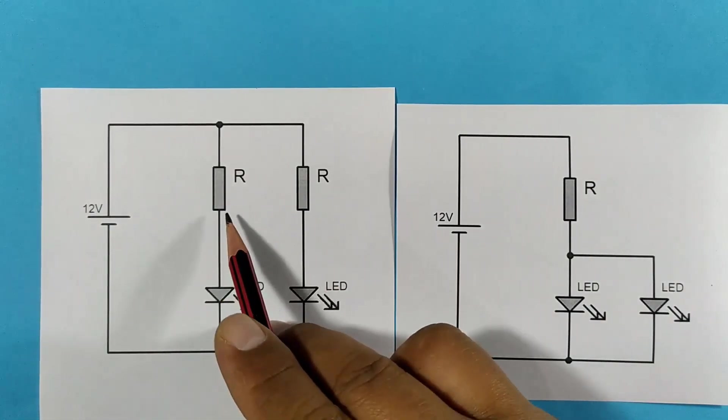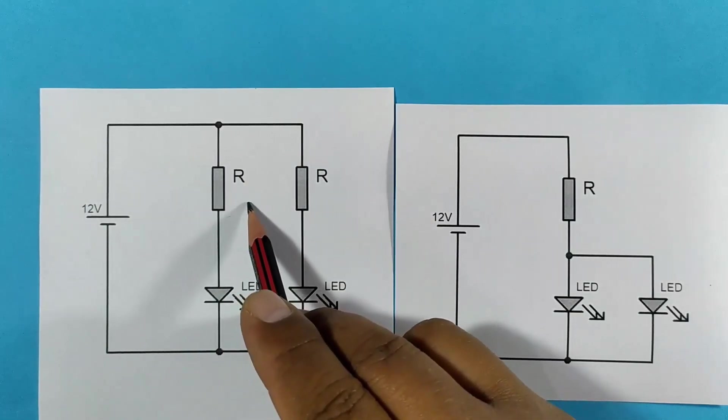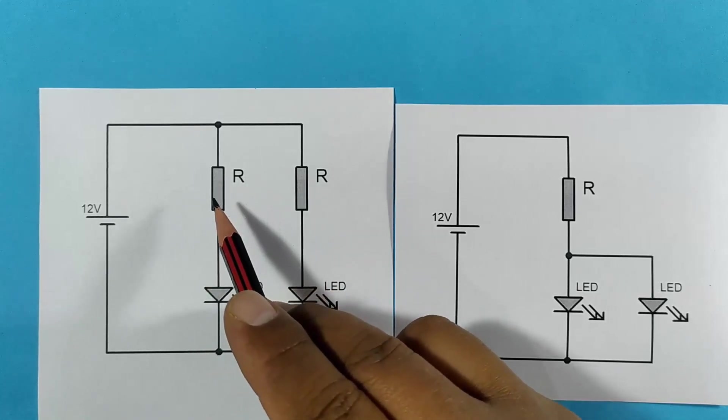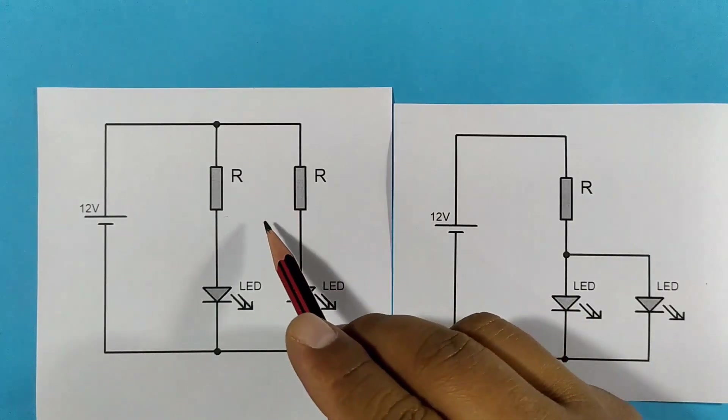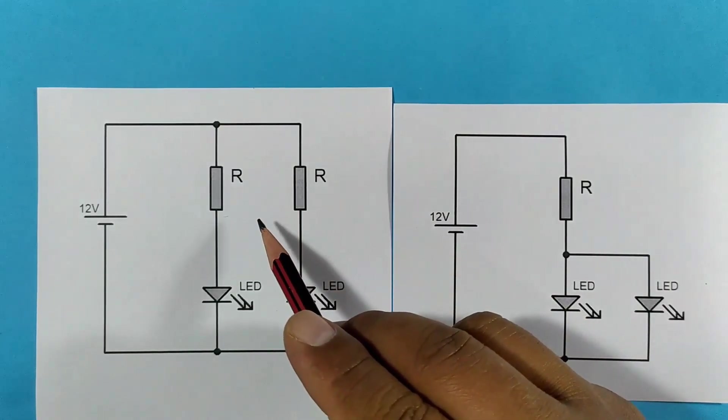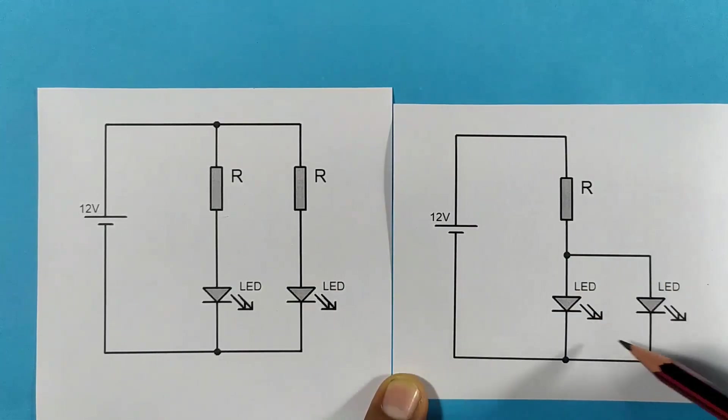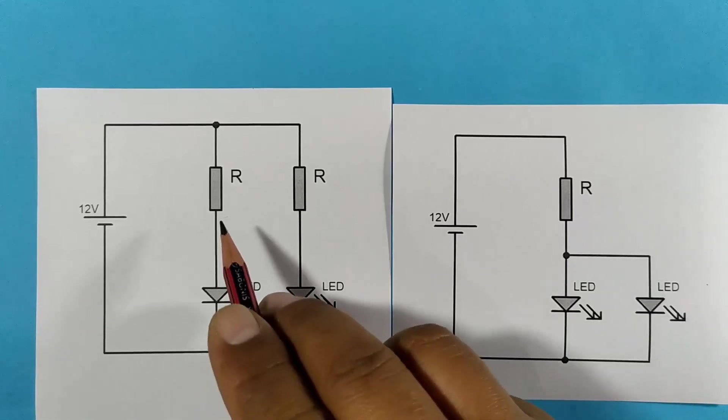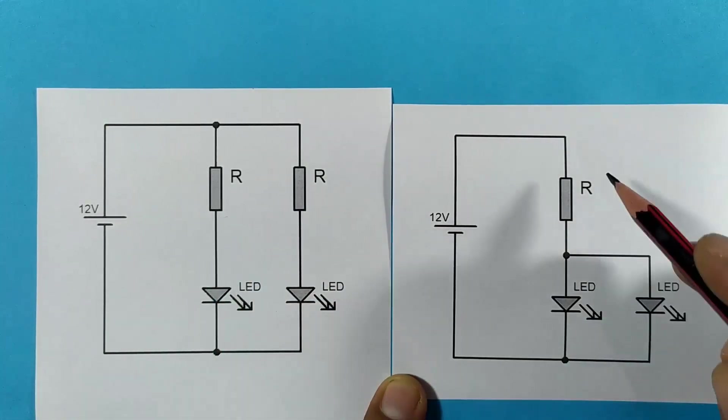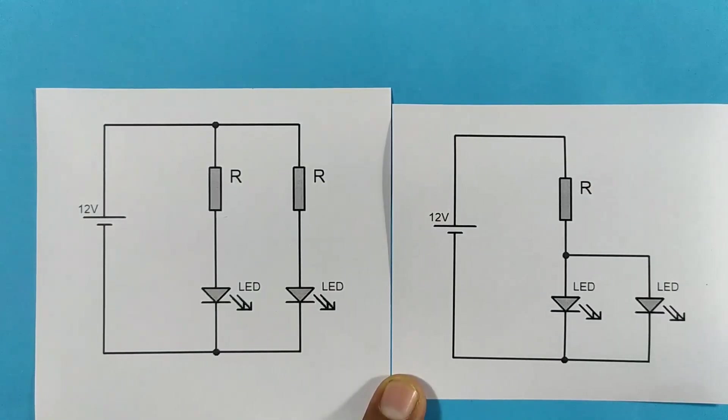Now how does this work? Well, in the same way we saw previously, we calculate the value of the resistor based on the voltage drop across it, which in the previous case was 500 ohms of a quarter of a watt. But in the case of sharing the resistor for two LED diodes, the value of the resistor would have to be reduced by half. Instead of 500 ohms as we calculated here, it would be 250 ohms, but the power in this case would increase to half a watt.